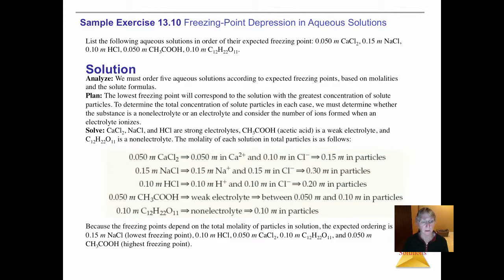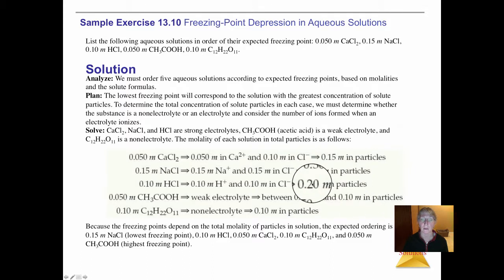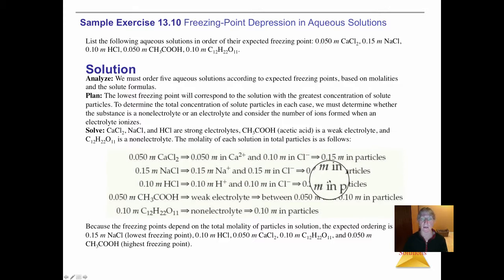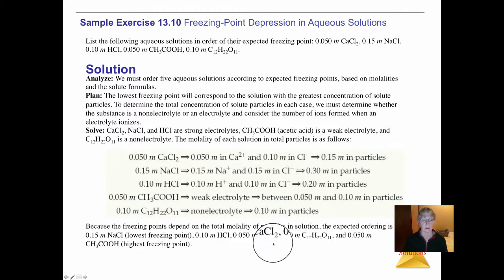So all you have to do is compare the total molality numbers. The one with the greatest number of molality is salt at 0.30 — it should have the lowest freezing point. Next is hydrochloric acid at 0.2, then calcium chloride at 0.15, then acetic acid, and finally sugar. There appear to be typos in the answers at the bottom of the page, but the stuff in the shaded box is correct. Always take into account that when solutes are electrolytes, you need to apply the Van 't Hoff factor multiplier.